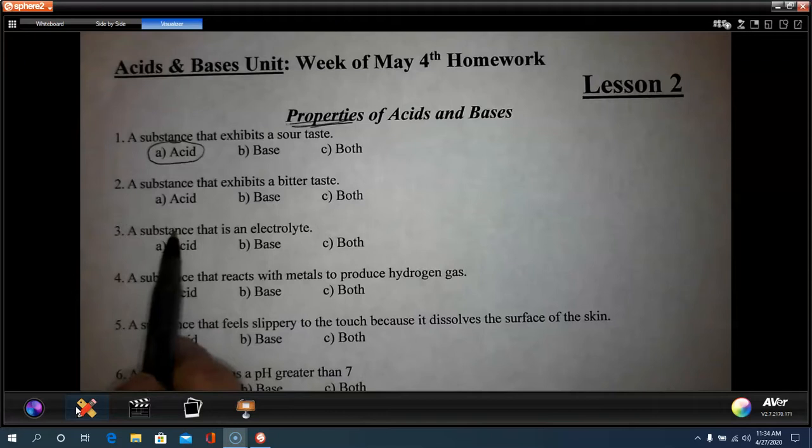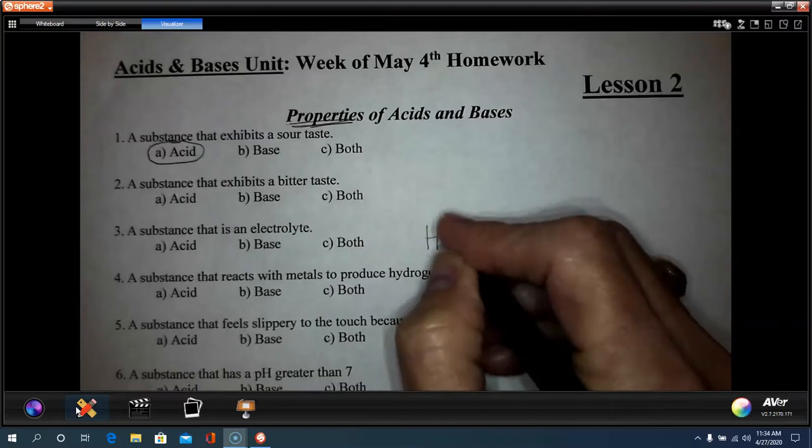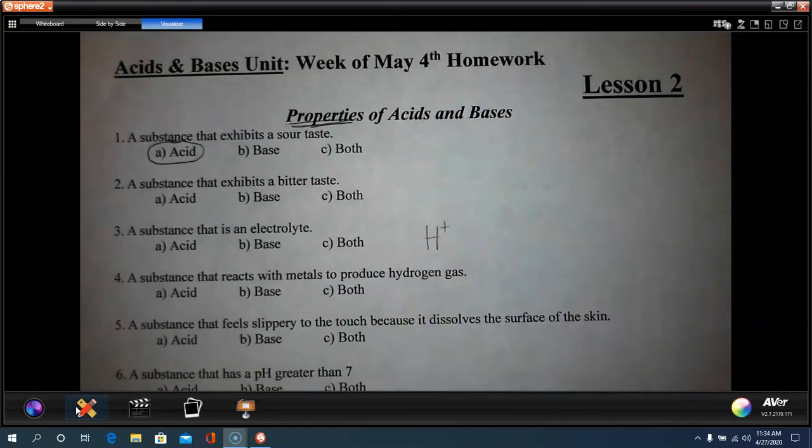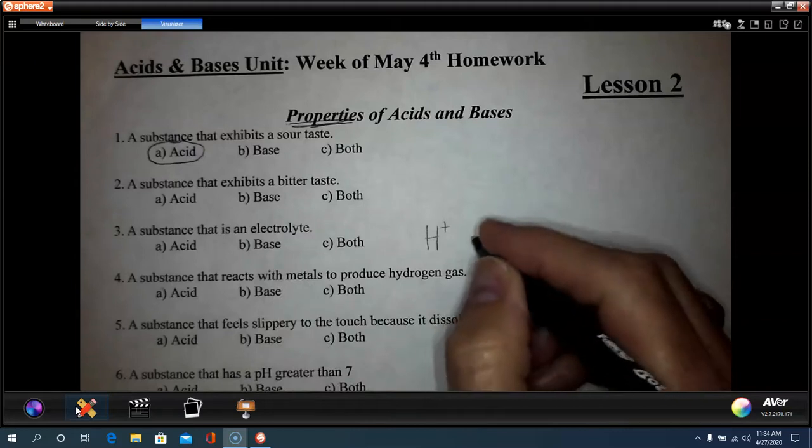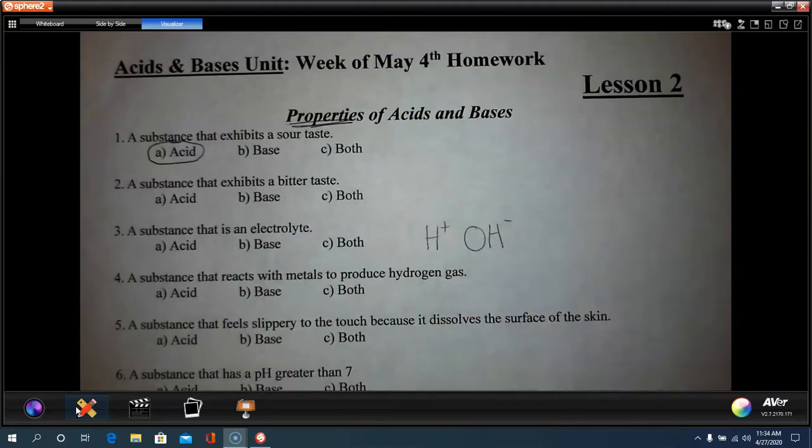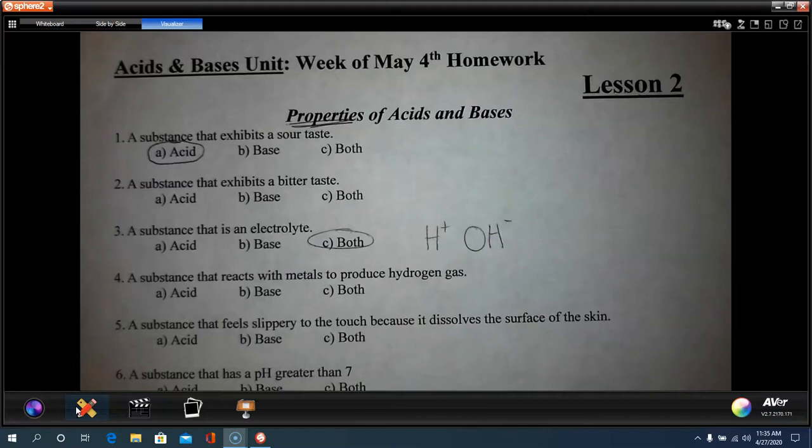Number three, a substance that is an electrolyte. So when acids dissociate, they give off the hydrogen ion. That makes something an electrolyte because it has charges in there. Also, hydroxide is given off when a base dissociates. So both of these things will create a pathway for electrical charges, which is what an electrolyte is. So both acids and bases are electrolytes.